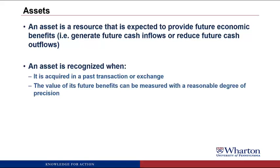Or let's say we make a sale to a customer and they promise to pay us within 30 days. This would be an asset called accounts receivable, because it was acquired in an exchange — we gave up some goods to get that promise to pay — and the value of its future benefits can be measured because it's right there on the invoice.